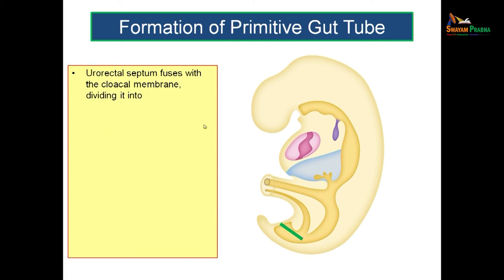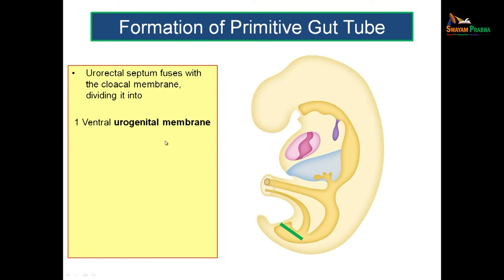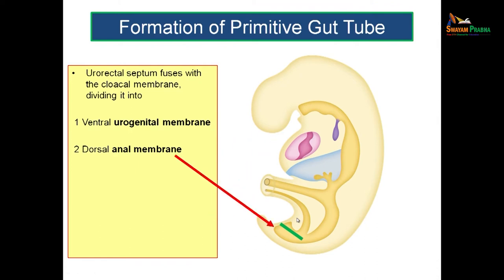The urorectal septum fuses with the cloacal membrane. As it comes down, it fuses with the cloacal membrane so that the cloacal membrane is divided into two parts. Ventrally, you call it the urogenital membrane, and dorsally, you call it the anal membrane. These two membranes will be getting perforated in order to make communication with the exterior in the future — that is, the anal orifice and the urogenital orifices will be formed by the perforation of the urogenital membrane and the anal membrane.